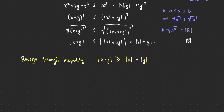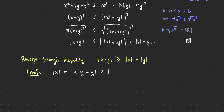Here's how to prove the reverse triangle inequality. Start with |x|, then add and subtract y: |x| = |(x − y) + y|. The triangle inequality applies to a sum, so |(x − y) + y| ≤ |x − y| + |y|. Bringing |y| to the other side gives |x| − |y| ≤ |x − y|.